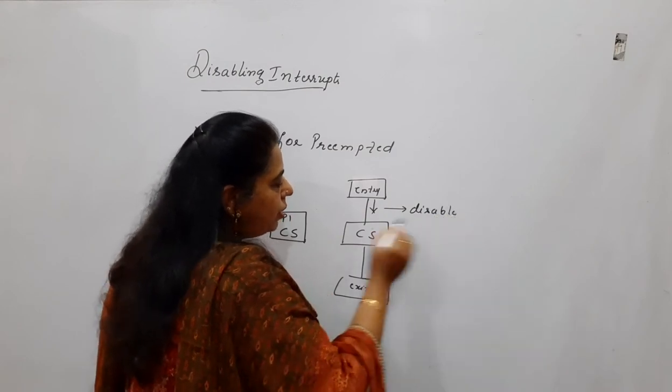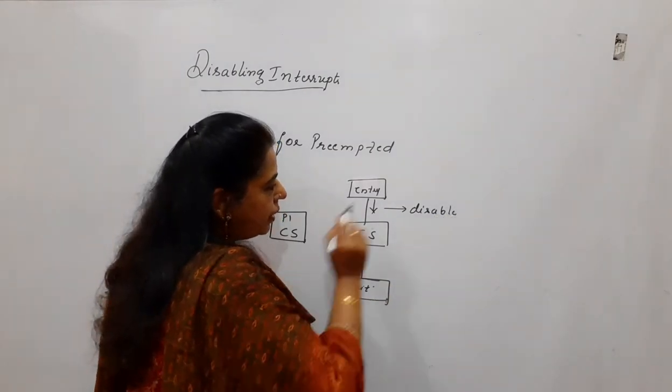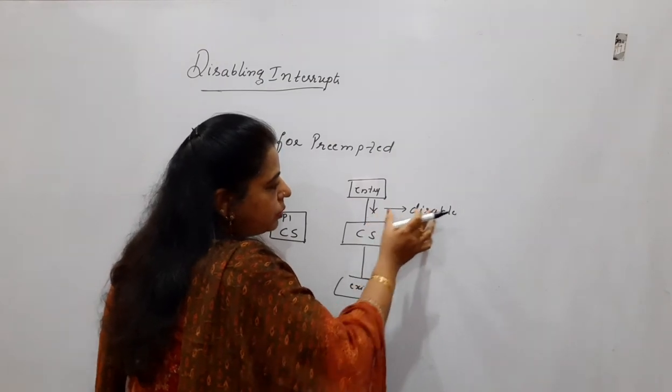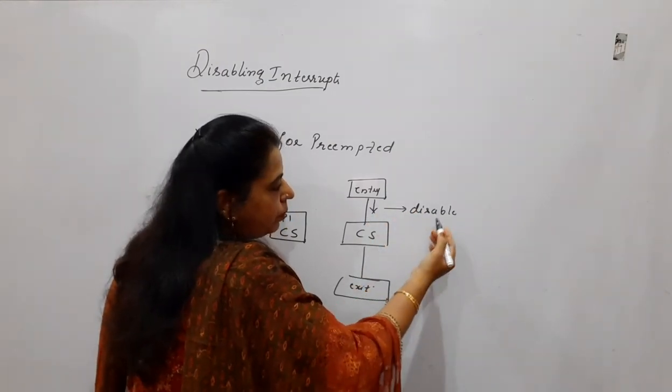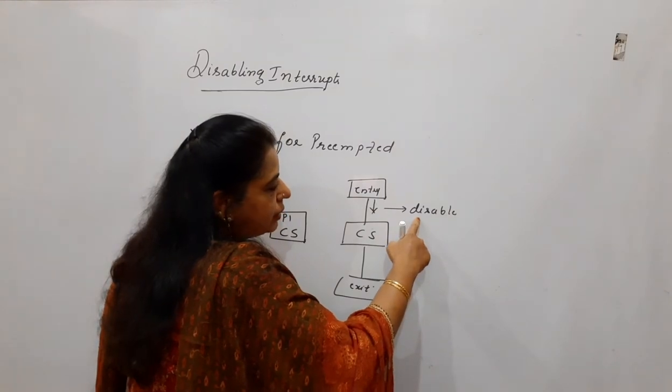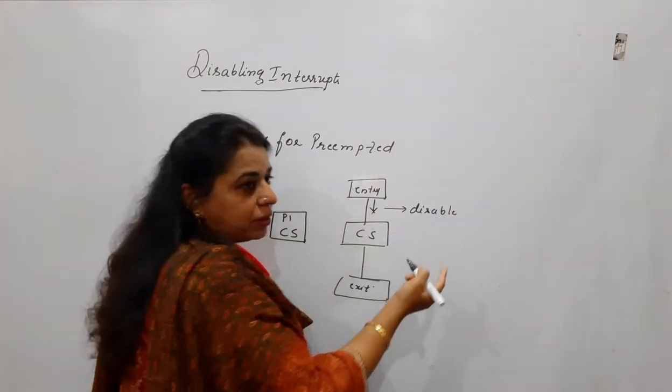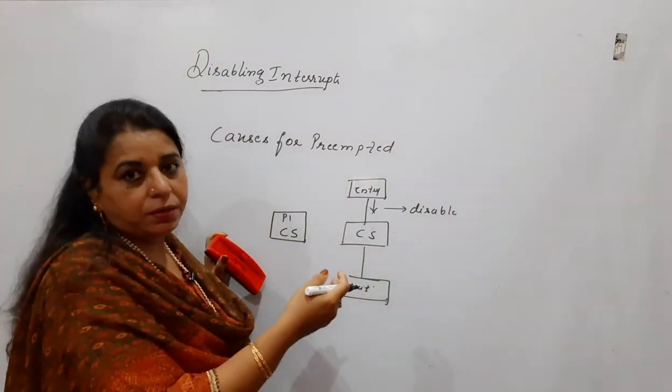If the interrupts are disabled, no other process will be allowed to enter into the critical section because this process will not get preempted. In simpler words, you can say that if the interrupts are disabled, then this interrupt is like an interruption.